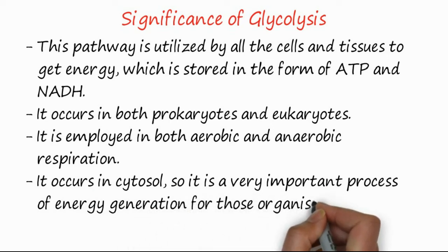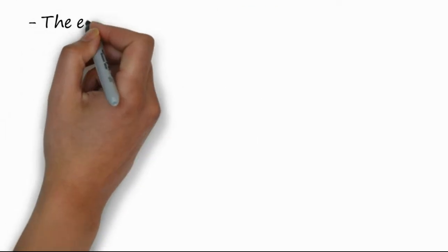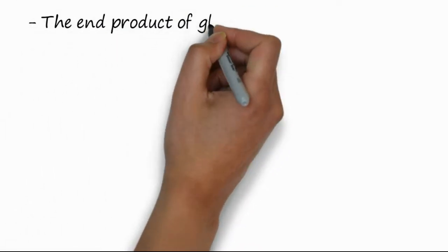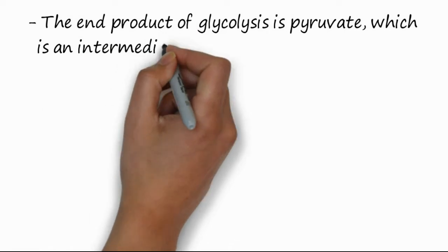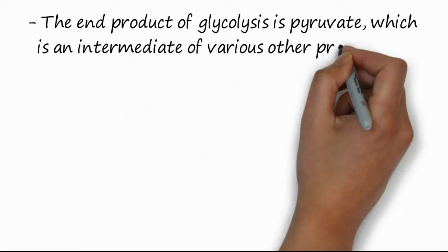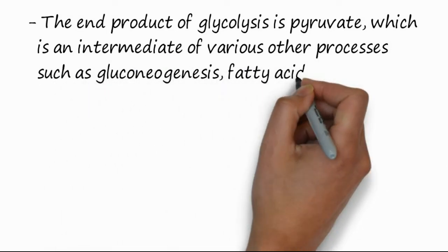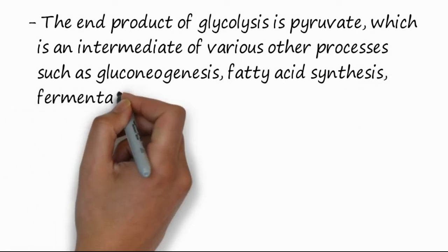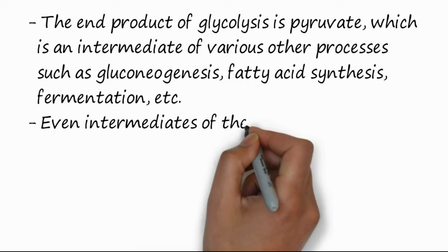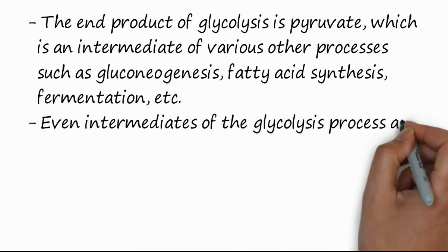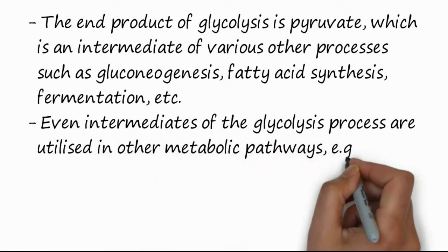Glycolysis is especially critical for organisms that do not possess mitochondria. The end product of glycolysis is pyruvate, which is an intermediate of various other processes such as gluconeogenesis, fatty acid synthesis, fermentation, and others. The intermediates of the glycolysis process are also utilized in other metabolic pathways.